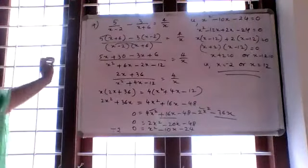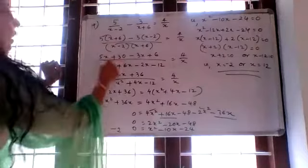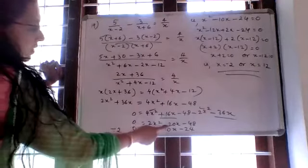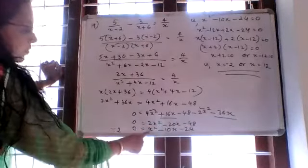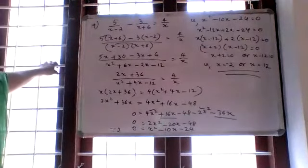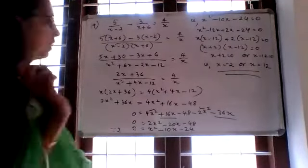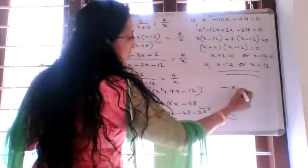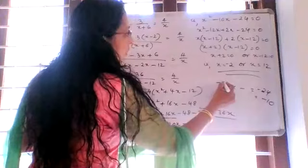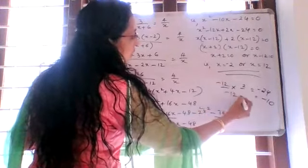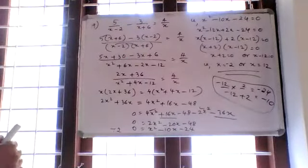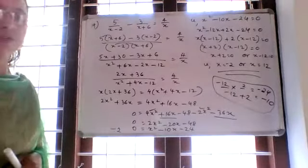Question 19: After cross multiplication and expanding brackets, we get 2x squared minus 20x minus 48 equals 0. Dividing throughout by 2 gives x squared minus 10x minus 24 equals 0. The two numbers are negative 12 and positive 2, since negative 12 plus 2 equals negative 10. Final answer: x equals negative 2 or x equals 12.